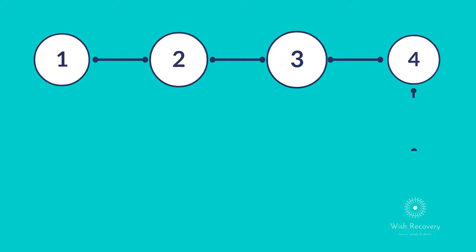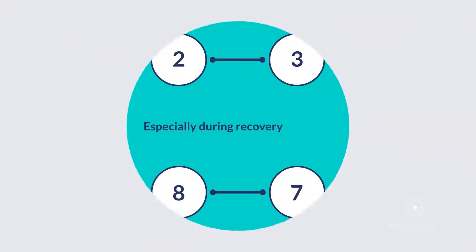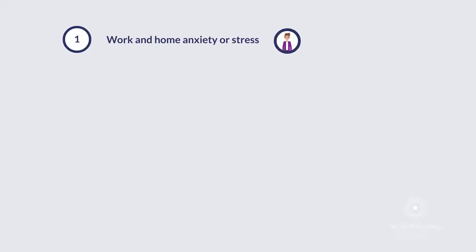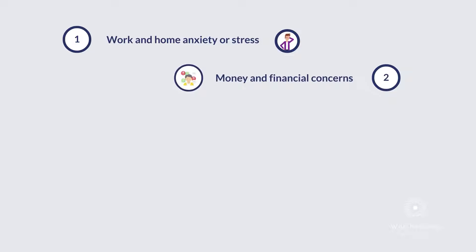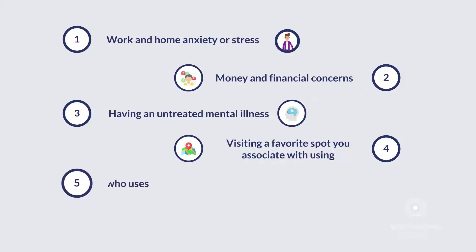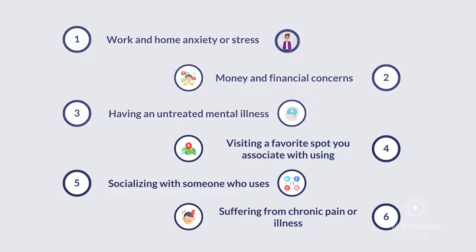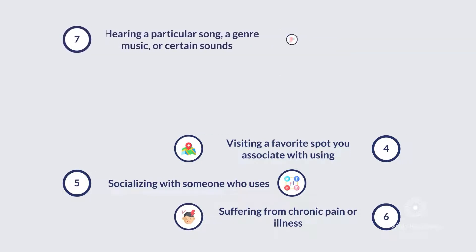But first, here are 9 common triggers of drug and alcohol abuse, especially during recovery. 1. Work and home anxiety or stress. 2. Money and financial concerns. 3. Having an untreated mental illness. 4. Visiting a favorite spot you associate with using. 5. Socializing with someone who uses. 6. Suffering from chronic pain or illness. 7. Hearing a particular song, a genre of music, or certain sounds.